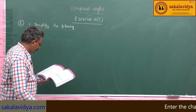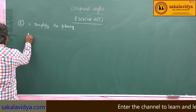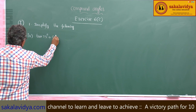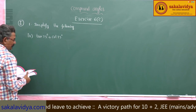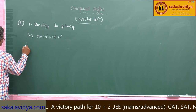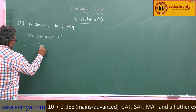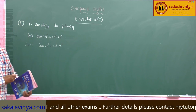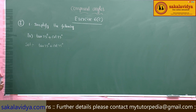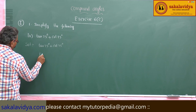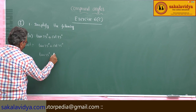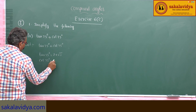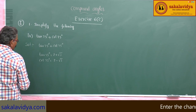Fourth problem: tan 75 degrees plus cot 75 degrees. Now, solution. We know the values of tan 75 and cot 75. Tan 75 degrees is equal to 2 plus root 3, and cot 75 degrees is equal to 2 minus root 3. Just remember these two values.